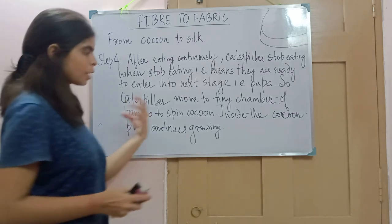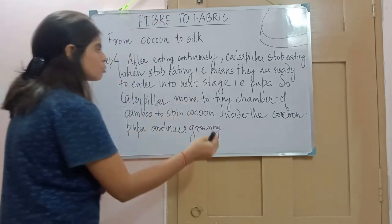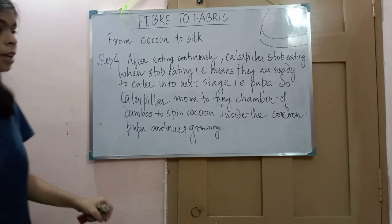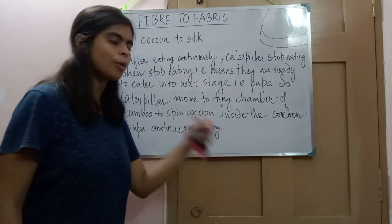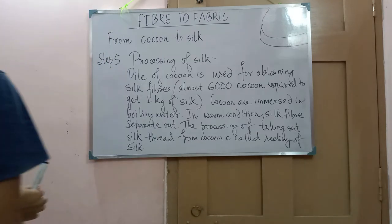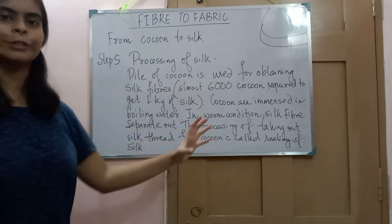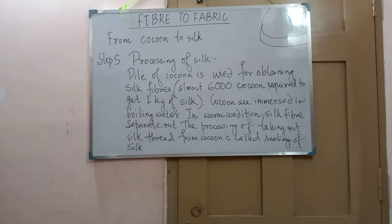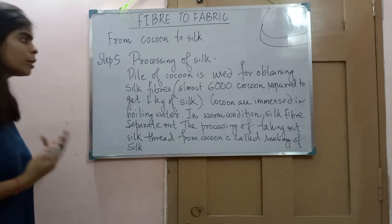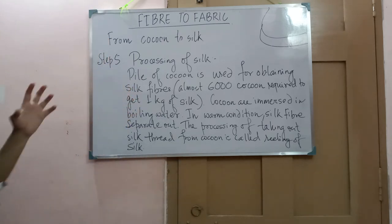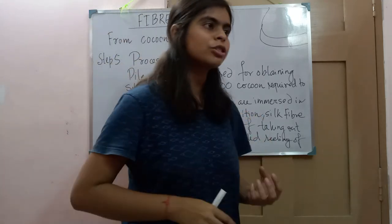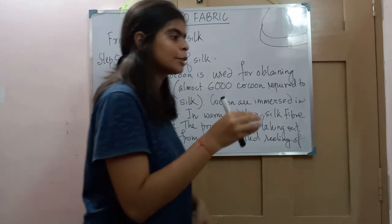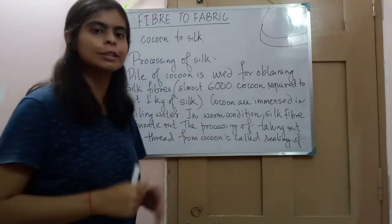Once the cocoon is formed, the pupa is inside and continues to grow. Now comes the main step — the processing of silk. Once the caterpillar forms a cocoon around itself, these cocoons are immersed in boiling water. In the warm condition they release a silk thread, and in this way we collect the silk fiber from the cocoon.